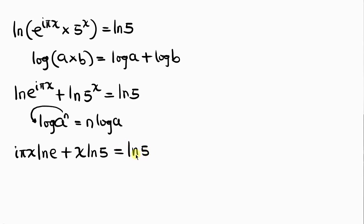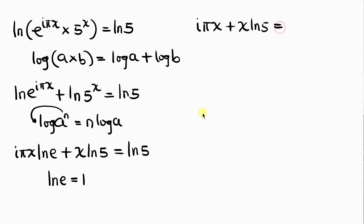Our next step is to apply the law that ln e equals 1, because ln is the inverse of the exponential function e. So the expression simplifies: 1 times i pi x gives us i pi x, plus x ln 5, equal to ln 5.